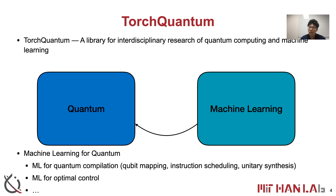On the other hand, we can also use machine learning to benefit quantum computing. For example, using machine learning to optimize the quantum compilation process, such as qubit mapping, instruction scheduling, and unitary synthesis. We can even use generative machine learning models to directly generate signals for quantum optimal control to achieve higher efficiency.